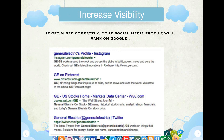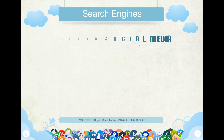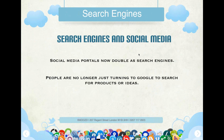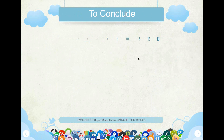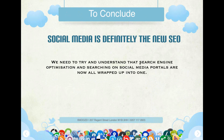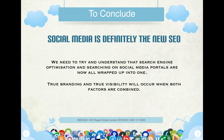Here's an example — look at General Electric on Twitter and Instagram: they're there, and as you can see, social media profiles often appear right at the top, thus beating generic SEO. Social media portals now double as search engines. People are no longer just turning to Google to search for products. To conclude: social media is definitely the new SEO. Search engine optimization and searching on social media portals are now wrapped up into one. True branding and true visibility will occur when both factors are combined.